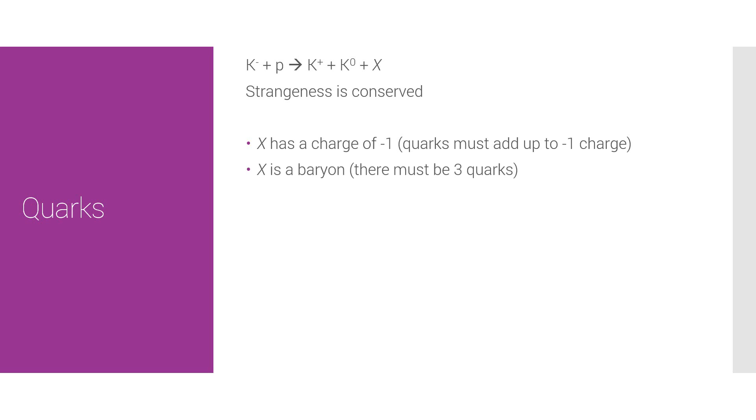We're also told that strangeness is conserved. So, let's deduce the strangeness of each side. So, K minus has to have a quark structure, which includes two quarks because it's a meson. It has to be a quark-anti-quark pair. It has to have a strange quark and it has to total up to minus one. The combination that works here is the strange-anti-up. A strange quark has strangeness of minus one. So, the left side has strangeness of minus one.